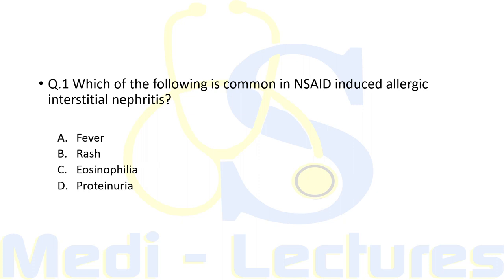MCQ: Which of the following is common in NSAID-induced allergic interstitial nephritis — fever, rash and eosinophilia, or proteinuria? Fever, rash, and eosinophilia are the classical presentations of AIN but are rarely seen with therapeutic agents. Atypical reactions like heavy proteinuria are common with NSAID-induced allergic interstitial nephritis. The correct answer is proteinuria.